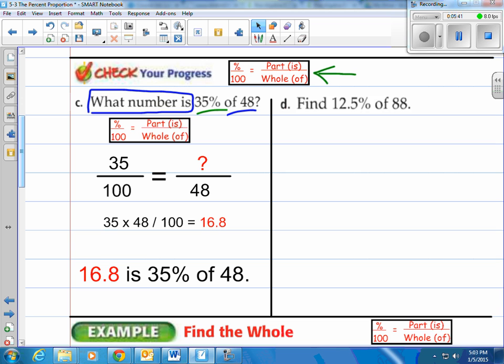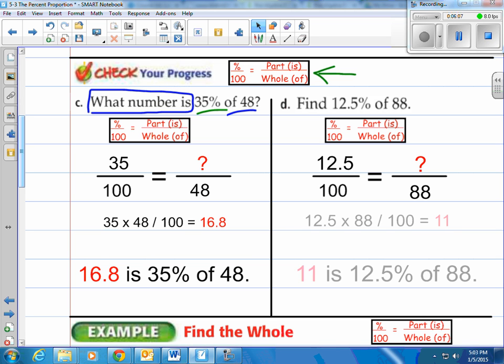Take a look at D here, it says find 12.5% of 88. Another way to say that is 12.5% of 88 is what? And the reason why I say that is I want to use that is word, and that's what we're looking for. So we're looking for the is, therefore, we'll have the question mark there, and then the 12.5 is the percent, and the 88 is the of. Of course, cross-multiply, divide by the 100, we have 11, and 11 is 12.5% of 88.